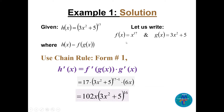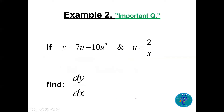That gives us 17 times (3x² + 5)^(17−1) times the derivative of g, which is 6x. So h prime = 102x(3x² + 5)^16.